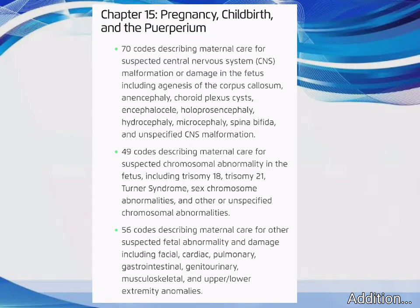Chapter 15 – Pregnancy, Childbirth, and the Puerperium: 70 codes describing Maternal Care for Suspected Central Nervous System (CNS) Malformation or Damage in the Fetus, including Agenesis of the Corpus Callosum, Anencephaly, Choroid Plexus Cysts, Encephalocele, Holoprosencephaly, Hydrocephaly, Microcephaly, Spina Bifida, and Unspecified CNS Malformation. Also 49 codes describing Maternal Care for Suspected Chromosomal Abnormality in the Fetus, including Trisomy 18, Trisomy 21, Turner Syndrome, Sex Chromosome Abnormalities, and Other or Unspecified Chromosomal Abnormalities.